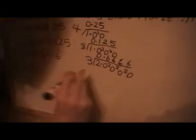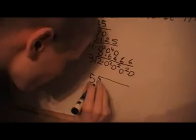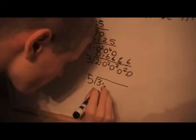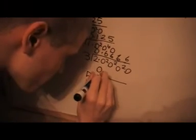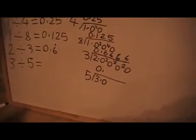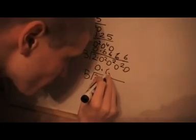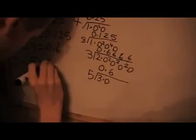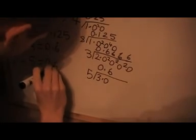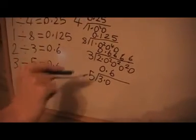One more problem. That's going to be 0 because 5 doesn't go into 3. 5 goes into 30, 6 times. So we get 0.6. Not 0.6 recurring because that went exact, and the other one it didn't.